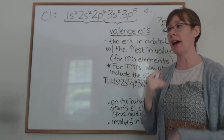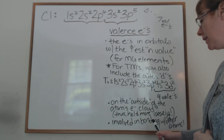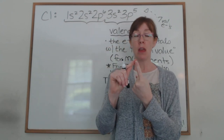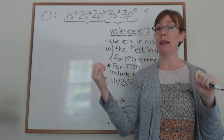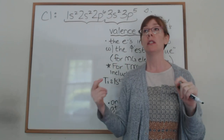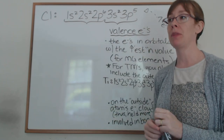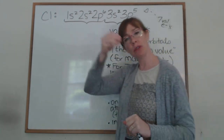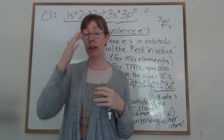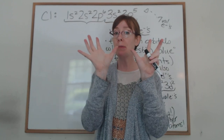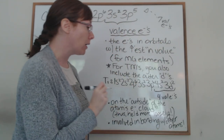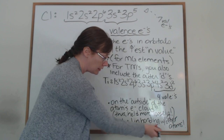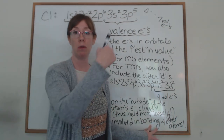Because they're on the outside, valence electrons are involved in bonding. There are two types: ionic bonding, where electrons are transferred from one atom to another because they're held loosely; and covalent bonding, where electrons are shared between atoms. Valence electrons being involved in bonding is going to be really important as we move into chapter nine.